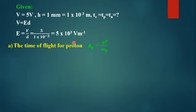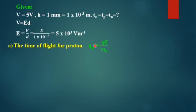For the time of flight, we first find the acceleration of the proton. According to Newton's second law, F = ma, so acceleration a = F/m. Since the proton is moving in the electric field, the electric force is F = qE. So the acceleration for the proton is a = qE/m_p.